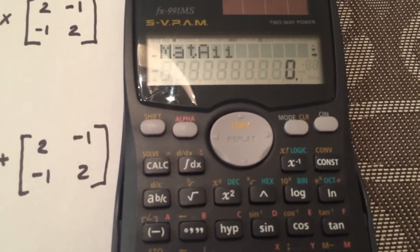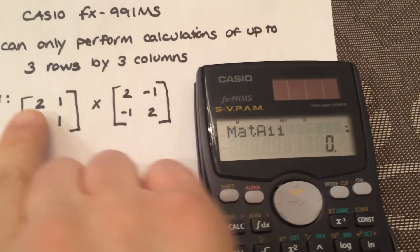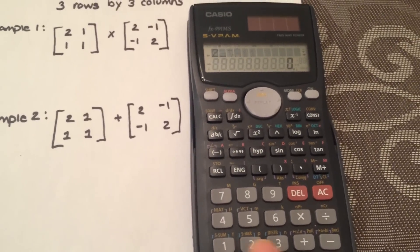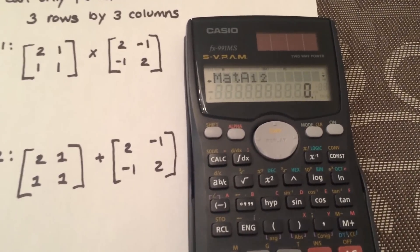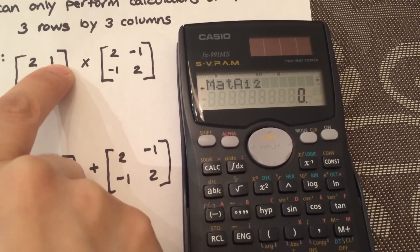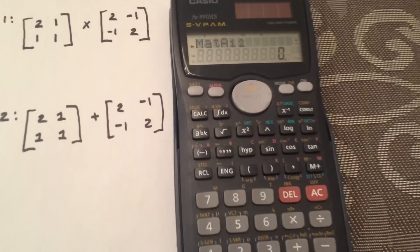Now it's asking me for the actual value. So it wants A11, so it wants the first one, which is 2. So I'm going to select 2. Now it's asking for A12, so first row, second column, so it's 1.